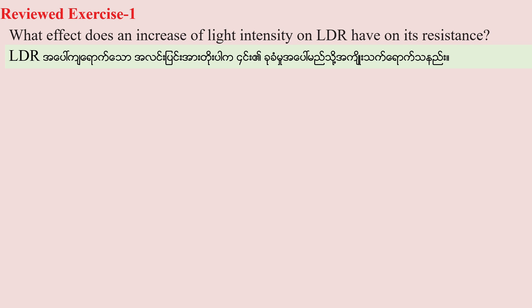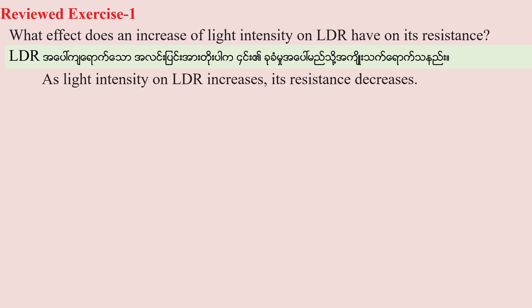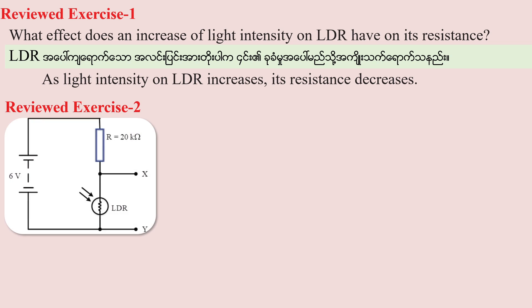Solution: When light intensity increases, more free electrons are released, making it a good conductor. Therefore, as light intensity increases, its resistance decreases.